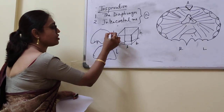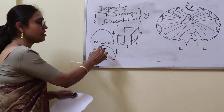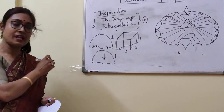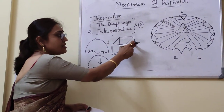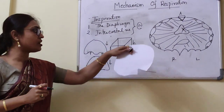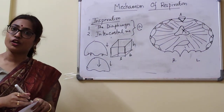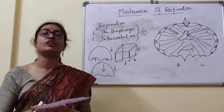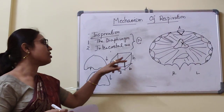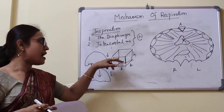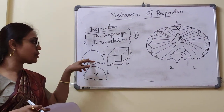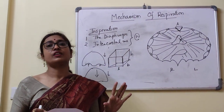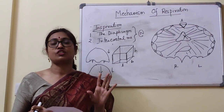You can easily appreciate that there will be an increase in the height of the thoracic cavity. As the height of the thoracic cavity increases, there will be an increase in volume. The diaphragm increases the height, the anteroposterior diameter, as well as the transverse diameter — all three diameters are increased due to contraction of the diaphragm.